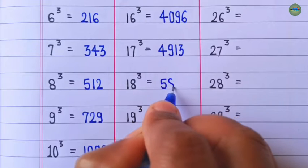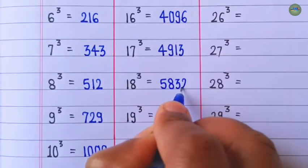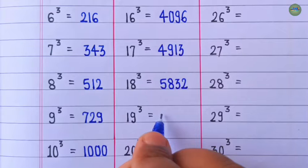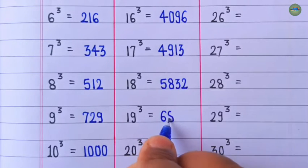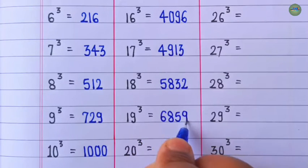Cube of 18 is 5,832. Cube of 19 is 6,859.